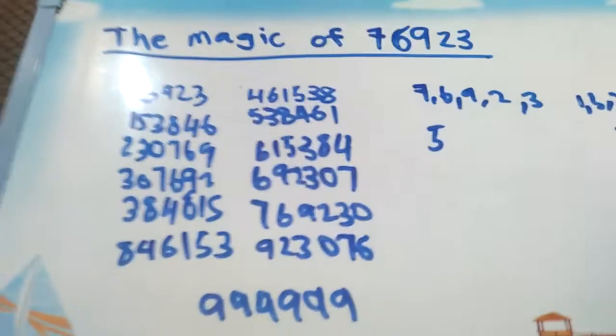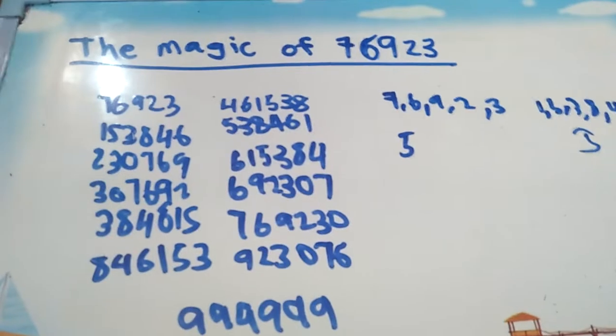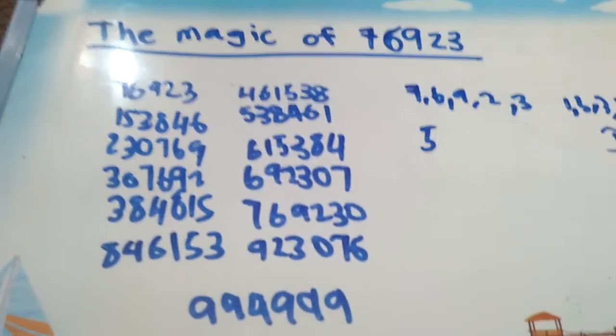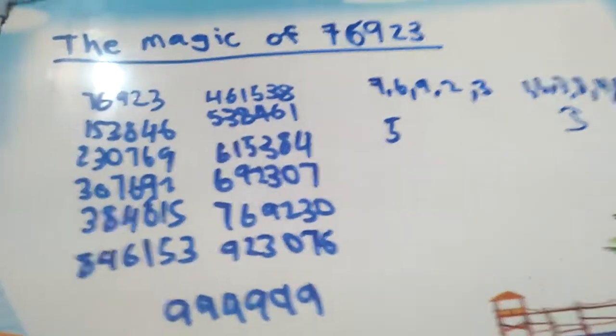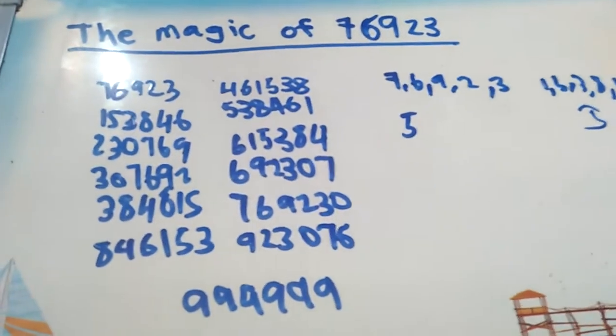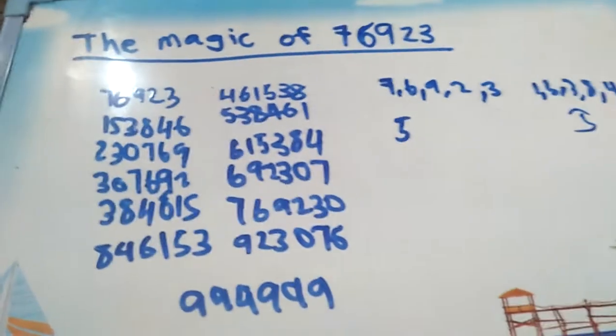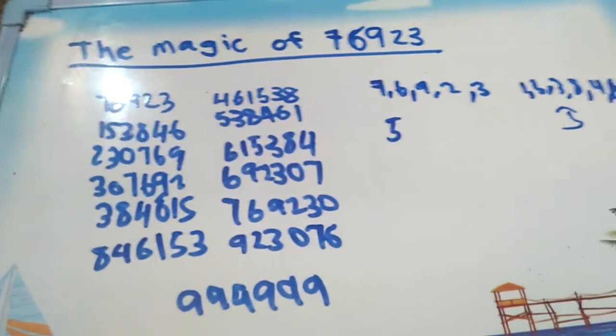Not really, because 142,857 changes its digits up to 6, and 76,923 changes its digits up to 12. So did you understand something from this?